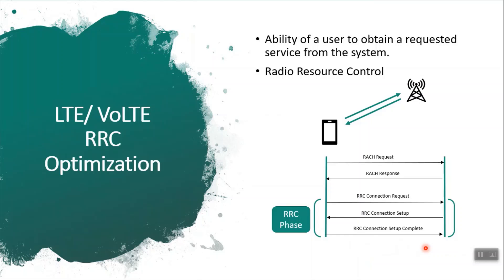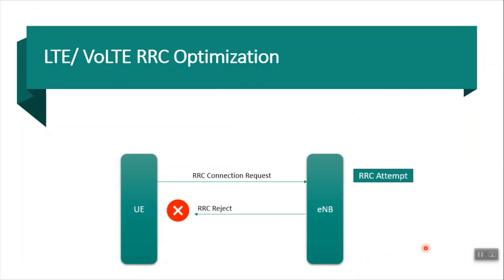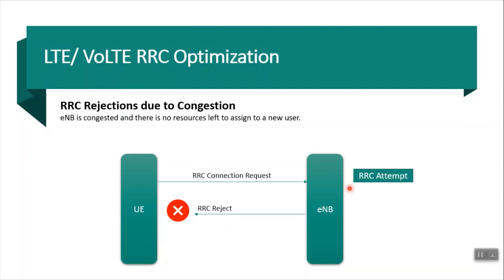If any of these messages fail, that means the RRC phase is not completed. In this picture, you can see this is the UE and this is the eNodeB. Once UE sends the RRC connection request, eNodeB has to respond with the RRC connection setup message. But sometimes eNodeB will not respond with RRC connection setup and instead responds with an RRC reject message. The reason may be that eNodeB is very busy or congested and does not have resources to allow new users.